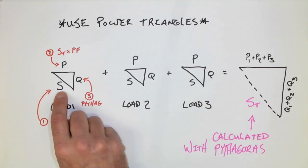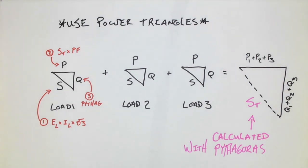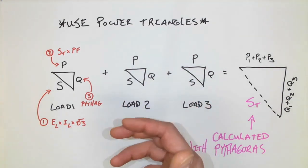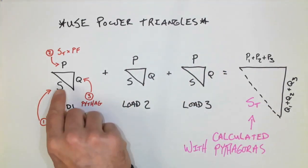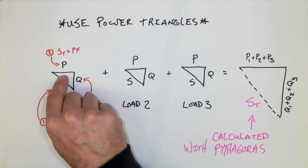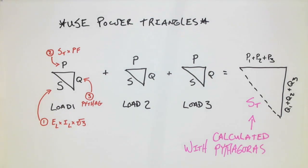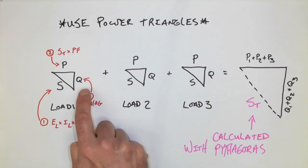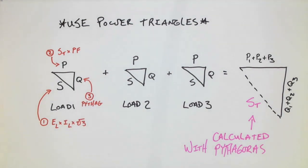That would be the VA of that individual load. Again, most of the questions will have the power factor of the load because we're dealing with things like motors or heaters. The S multiplied by the power factor will then render my power — the total power for that particular load. I choose to then use Pythagoras in order to work out the Q value on the vertical side. This is by no means the only process you must take; it is one of many that you could use, and I have found this one to be very straightforward.